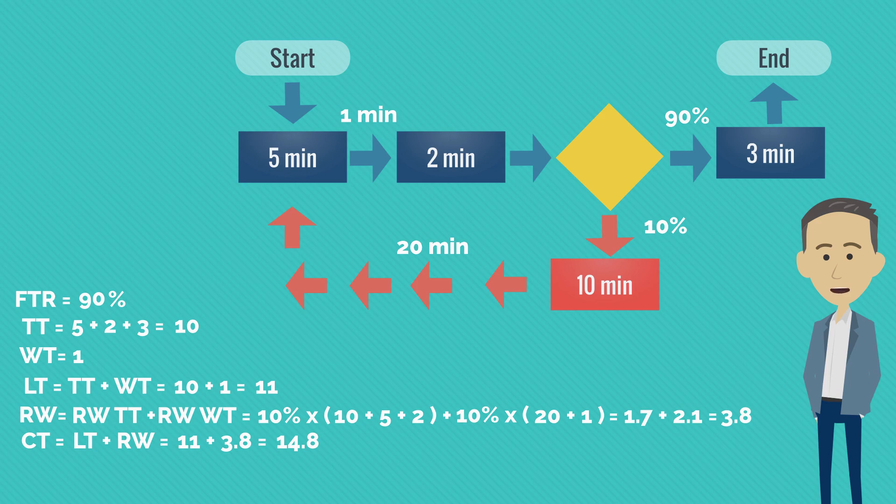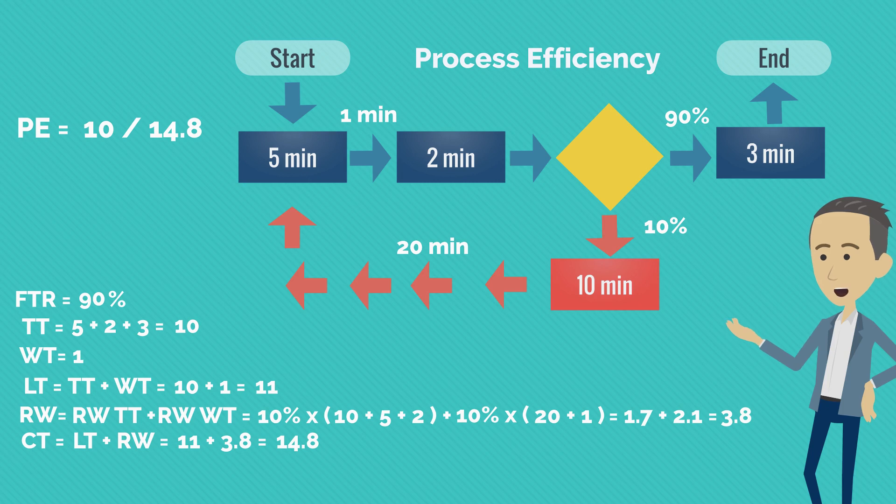We can easily calculate process efficiency, which is touch time divided by cycle time. So employees working on this process are in 67.5% of their time doing something other than waiting or rework, which we already know that it is waste. Also,